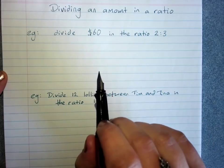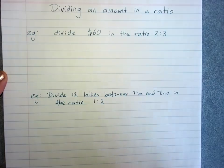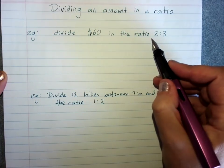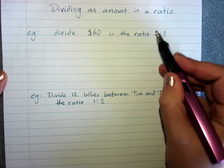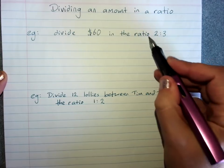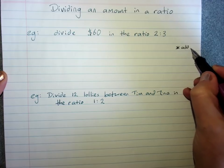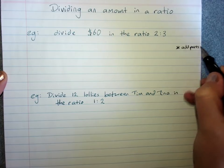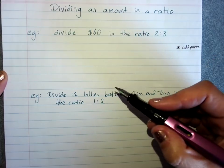There's a couple of different ways of doing it, but this way works quite well. Look for the fraction out of the total number of parts that each person will get. So we add up the parts, that's two plus three - there's five parts that we've got to split this sixty dollars into.